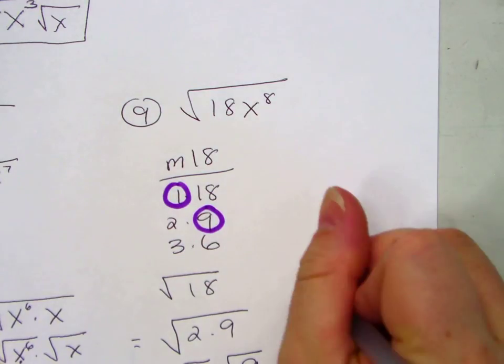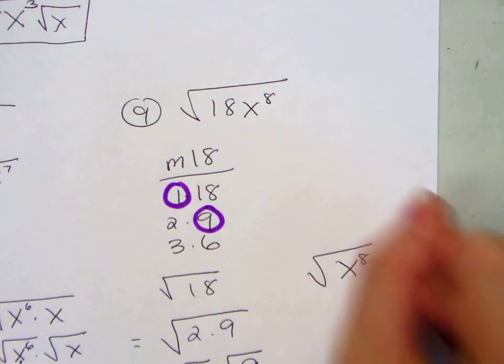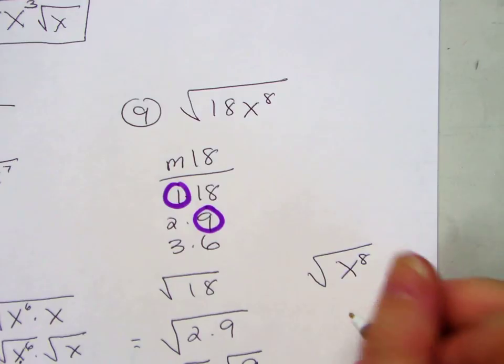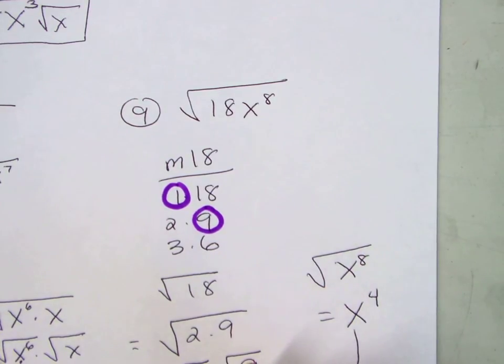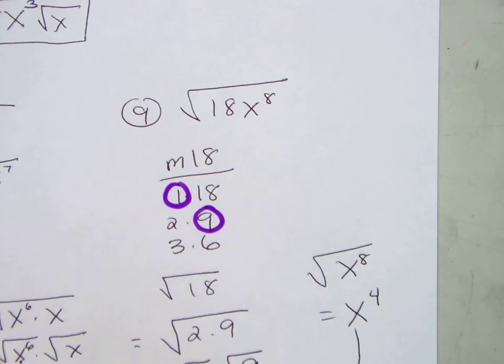And then radical x to the 8th. What's the square root of x to the 8th? Just divide by 2. When it's even, just divide by 2. And then I've got to shmush these together. So you get 3x to the 4th radical 2.